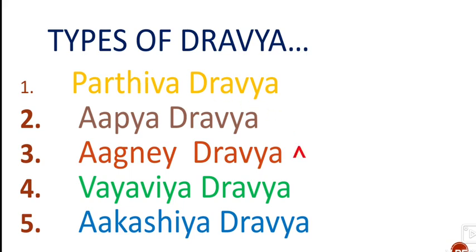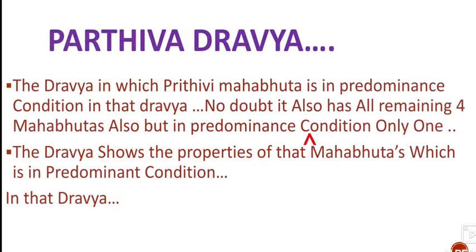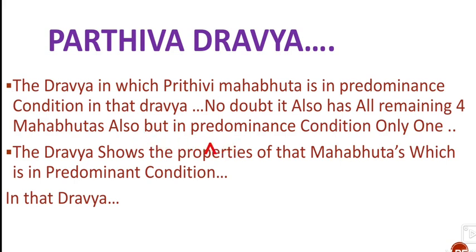The Parthiv Drava is the first type of Drava. Parthiv Drava means the Drava in which Prithvi Mahabhuta is in a predominance condition. As you all know, there are five Mahabhutas. Every Drava is formed by all five Mahabhutas, but if the Prithvi Mahabhuta is present in large numbers in predominance, that is called Parthiv Drava. No doubt it also has all remaining Mahabhutas, but in predominance condition only the Prithvi Mahabhuta.